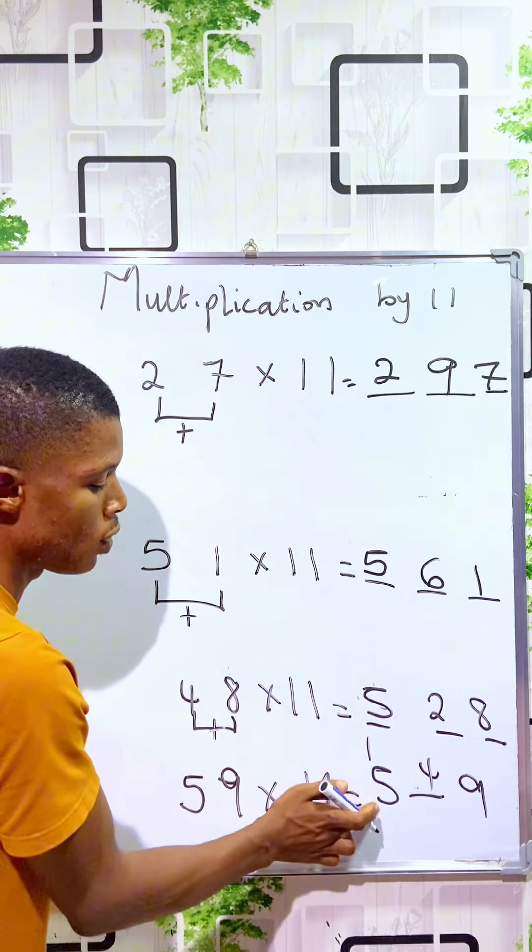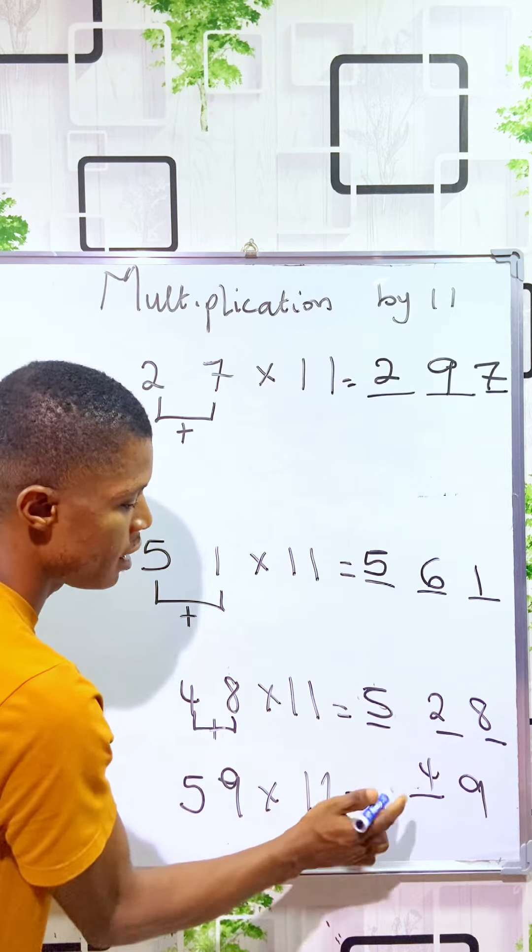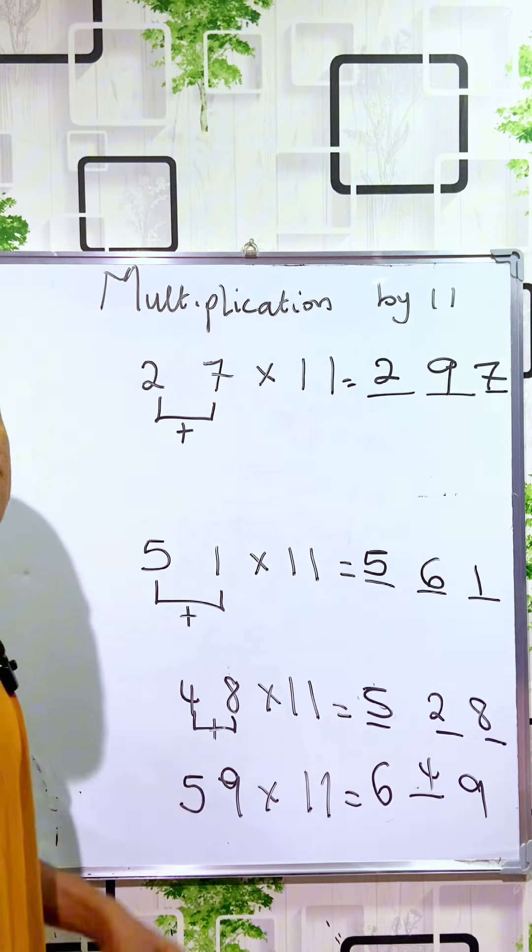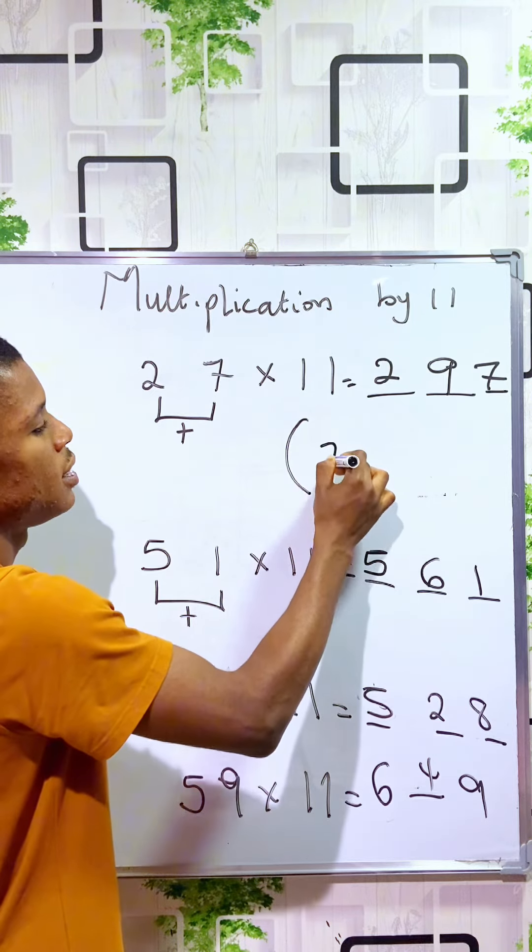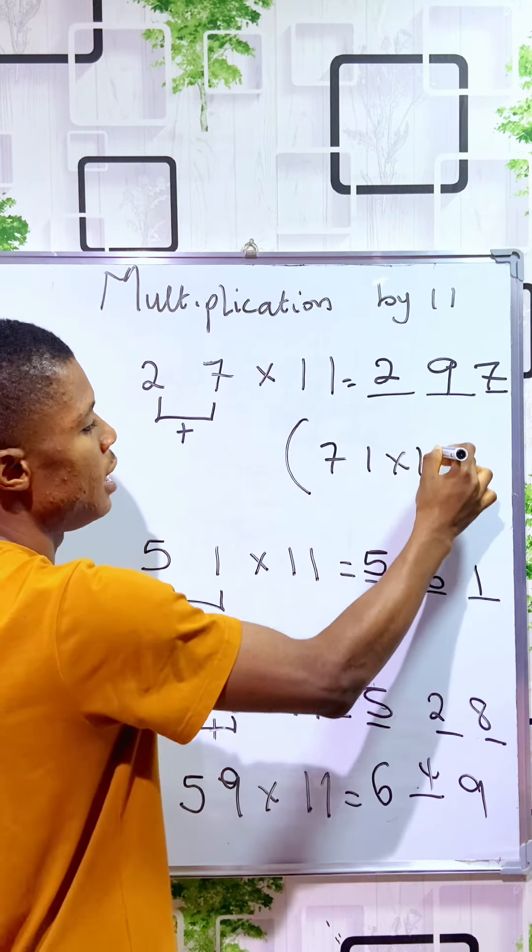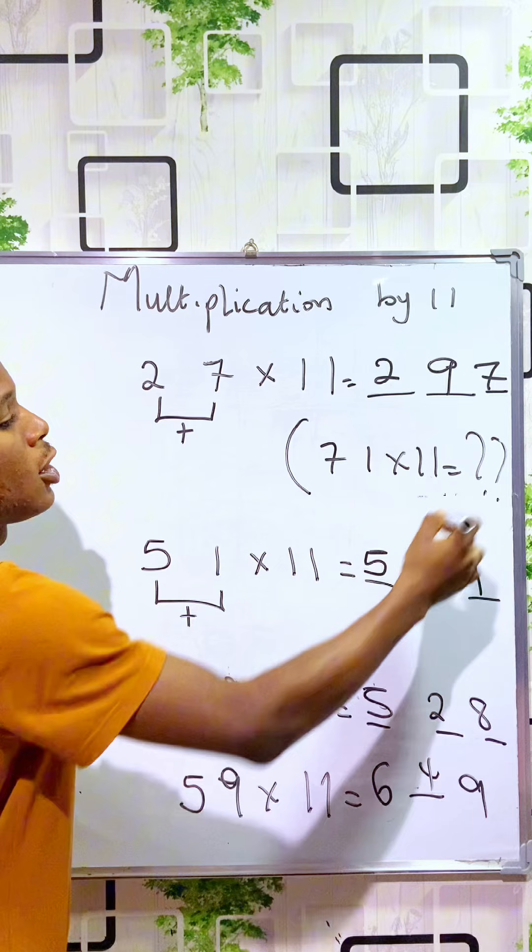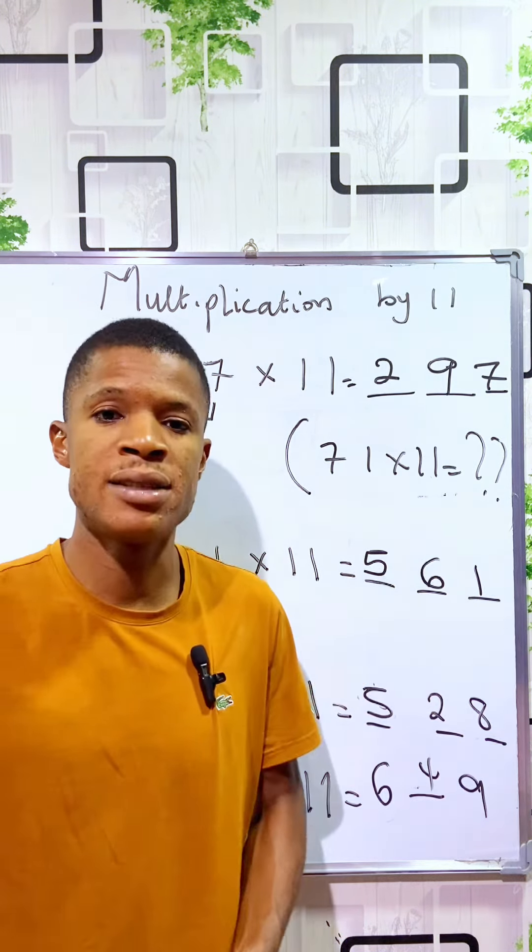It becomes 5 plus 1 is 6, so the answer is 649. If you understand this, I want you to try 71 times 11. Drop the answer in the comment. See you in my next video, bye!